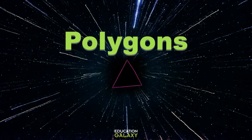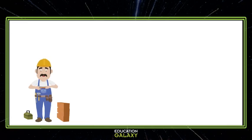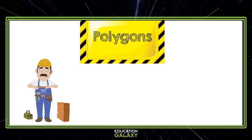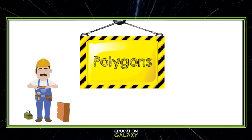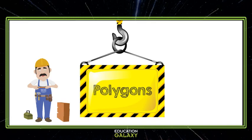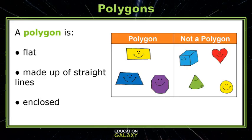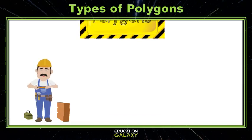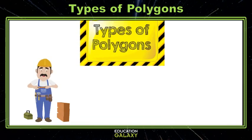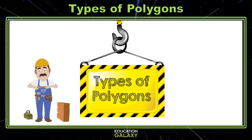Grab your hard hats. It's time to learn about polygons. A polygon is a flat figure that's made up of straight lines and is enclosed. Now let's look at the types of polygons.